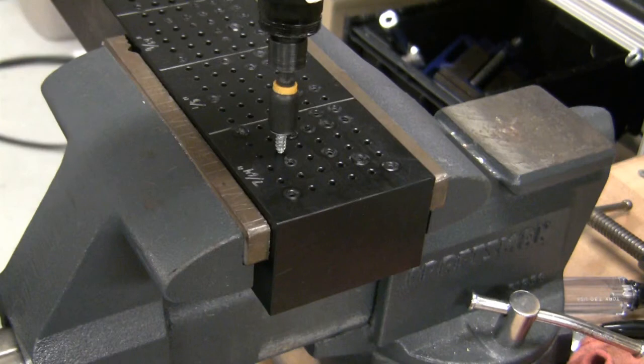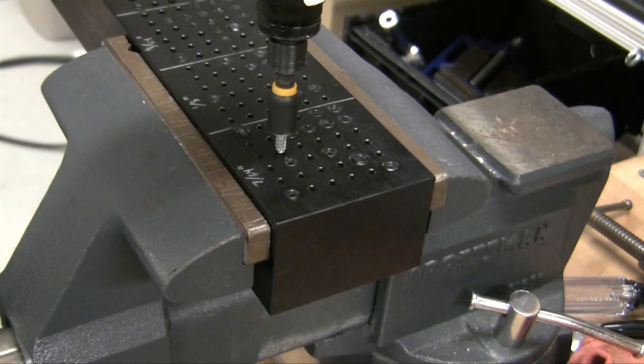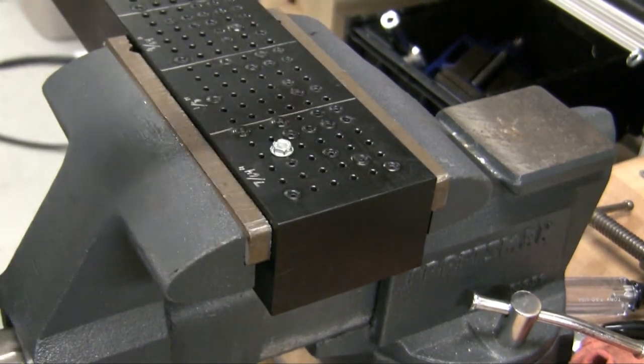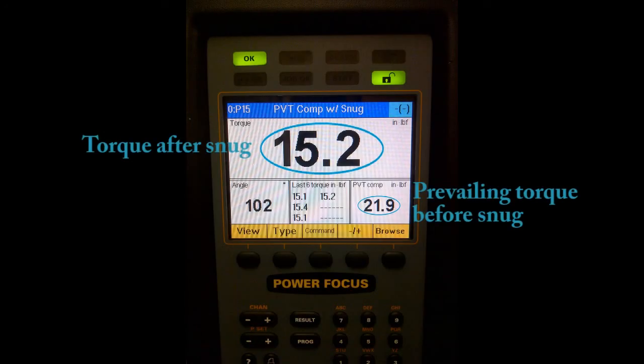Now, when running PVT Compensate with Snug Gradient, we are able to drive through the prevailing torque until the Snug Point is detected. When the Snug Point is reached, prevailing torque is calculated and an additional 15 inch-pounds of torque is added.